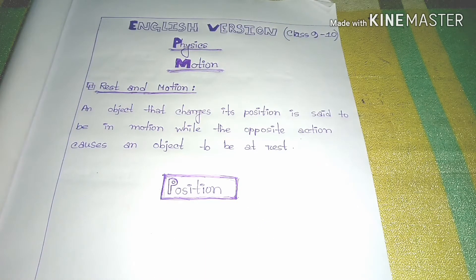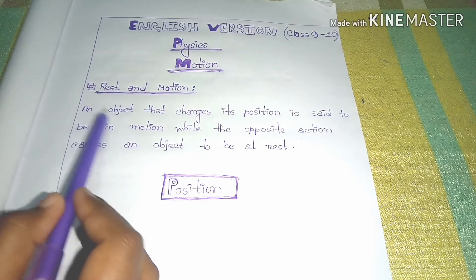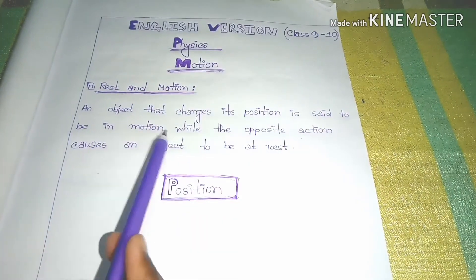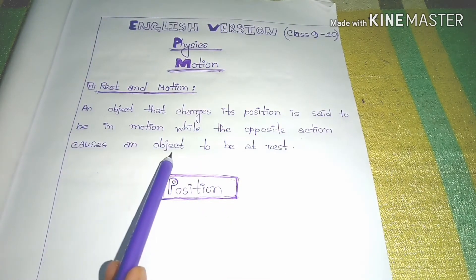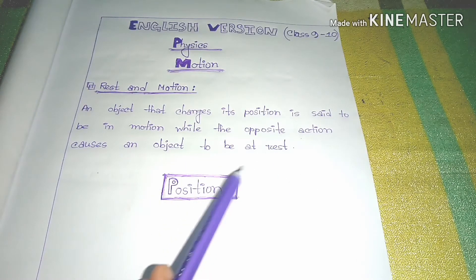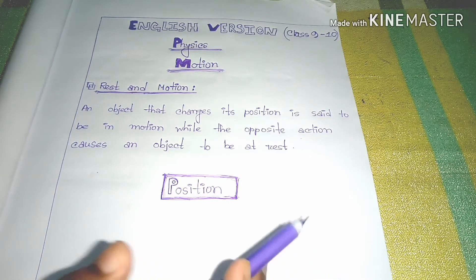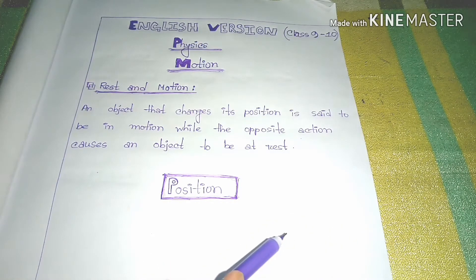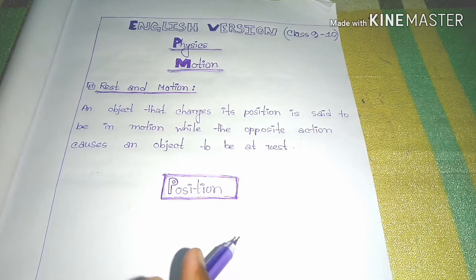First of all, we have to know the definition of rest and motion. An object that changes its position is said to be in motion, while the opposite action causes an object to be at rest. So any object that changes its position we can say to be in motion, and while the opposite action causes we can say it to be at rest.